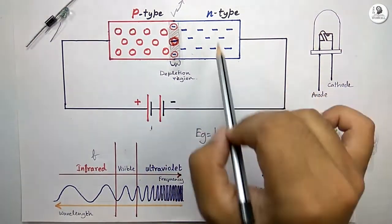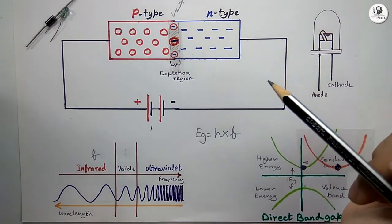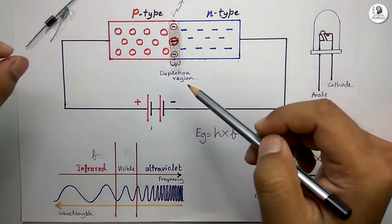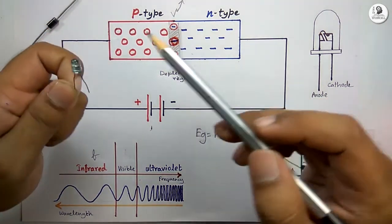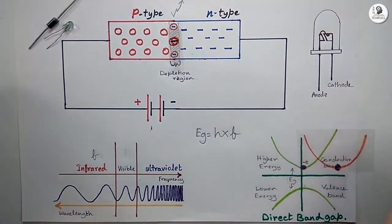This process of emitting light is very efficient, as very low amount of energy is wasted due to heat energy for this LED.